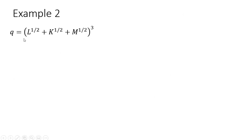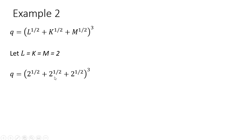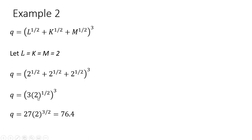Example 2. We have a slightly different production function. We'll start off the same way — let L, K, and M equal 2, plug those values into the production function, and simplify. 3 raised to the power of 3 is 27, and 2 to the 1/2 power raised to the power of 3 is 2 raised to the 3/2 power, which simplifies down to 76.4.